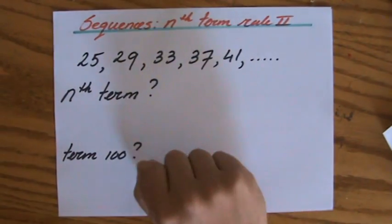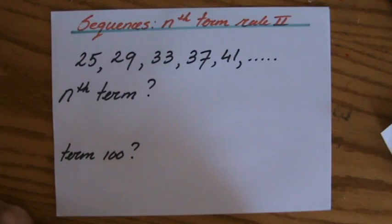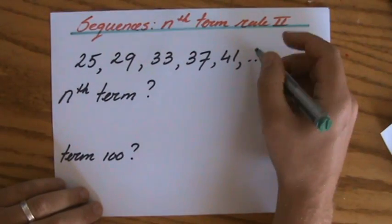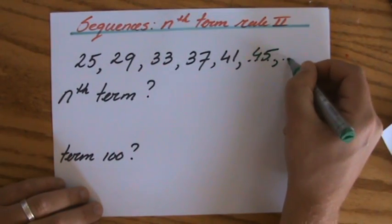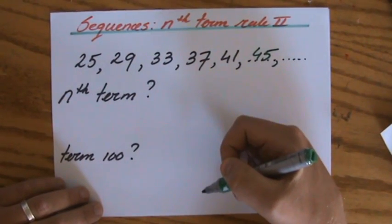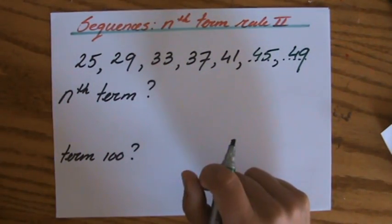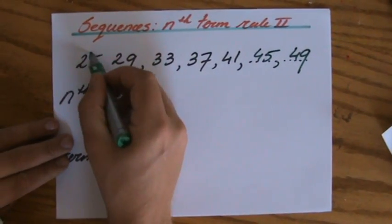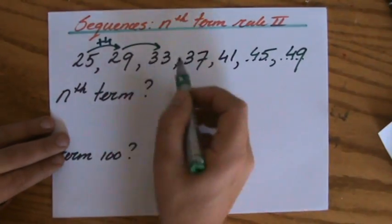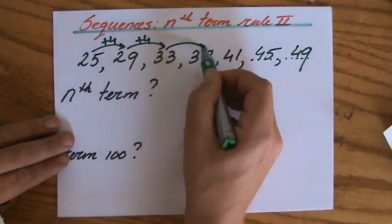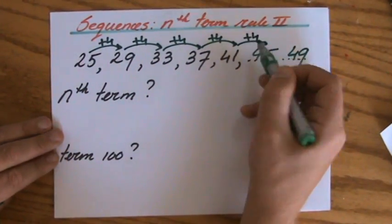What is term 6 going to be? Maybe some of you can already answer that. Term 6 is 45. What is term 7 going to be? 49. Because what is going on between each term? What is the term-to-term rule? It is add 4 all the time — plus 4, plus 4. So every time it is plus 4.